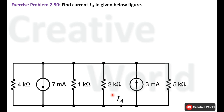We know that in order to apply current divider rule we should have only two parallel connected resistances across a current source. But in this circuit there are four parallel connected resistances and we are not interested to calculate their current. Our main point of concern is this branch, so we will try to simplify this network by taking the equivalent resistance of these parallel connected resistances. For that purpose we will use the equivalent resistance calculation formula for two parallel connected resistances.